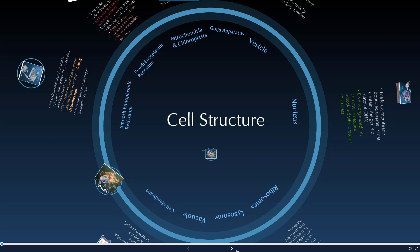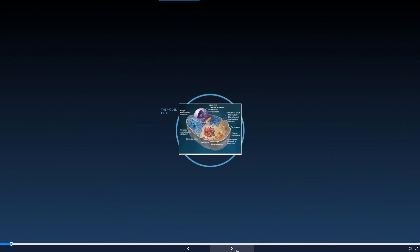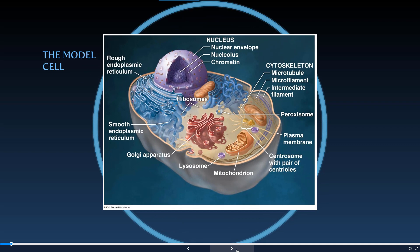Hello everyone and welcome to our presentation, part one of two on cell structure. We are looking at a eukaryotic cell — a typical model cell. We're going to be stepping through all of the different organelles and characteristics for a typical type of cell. We're not going to be touching on the specifics for prokaryotic cells today.